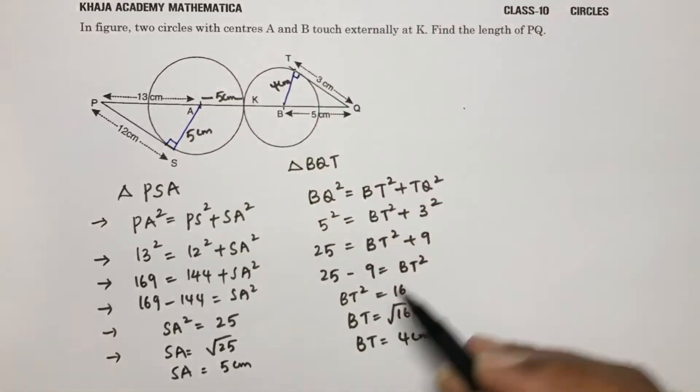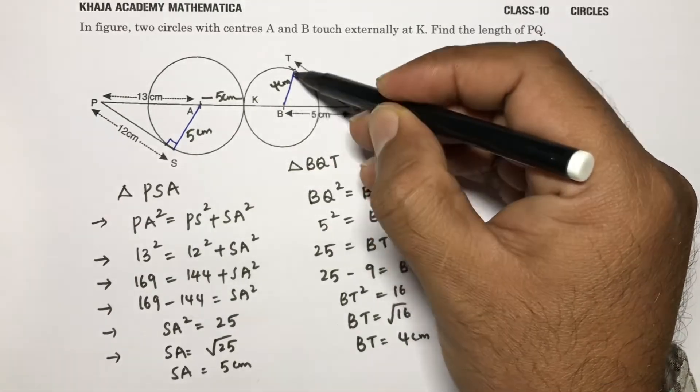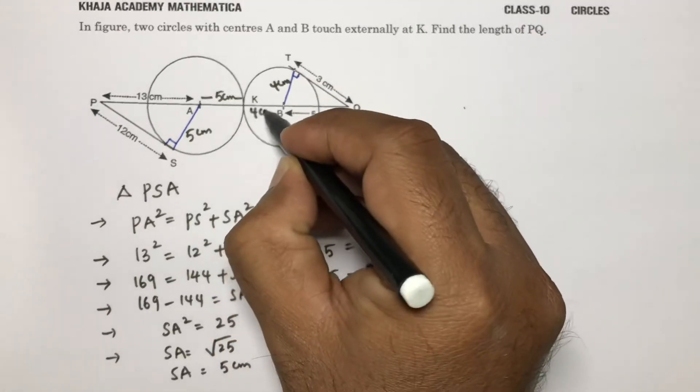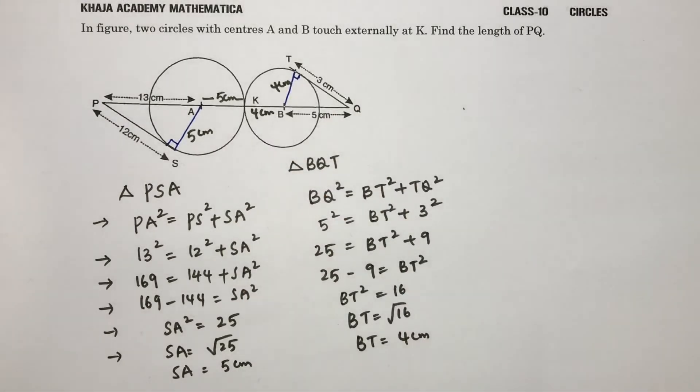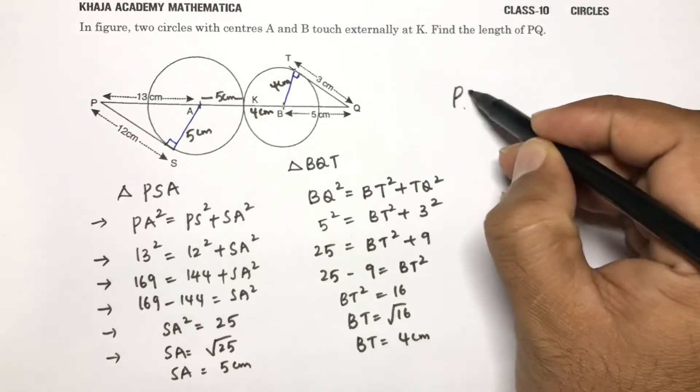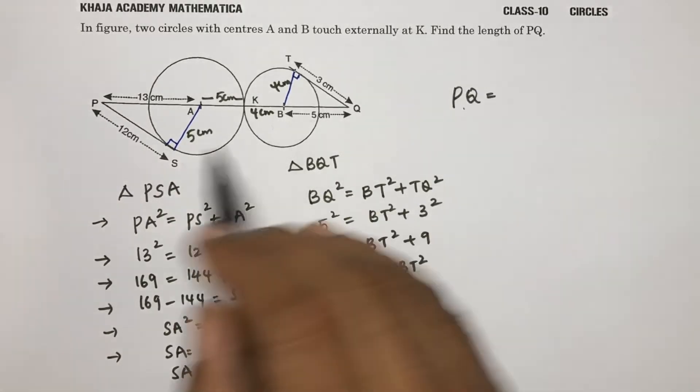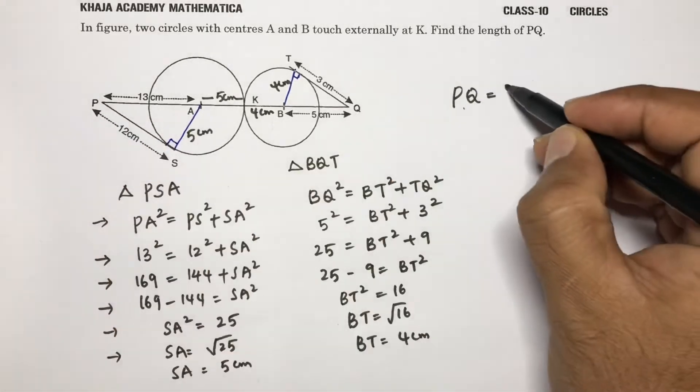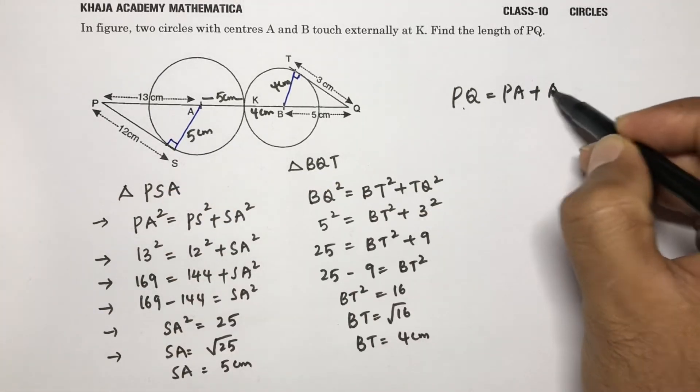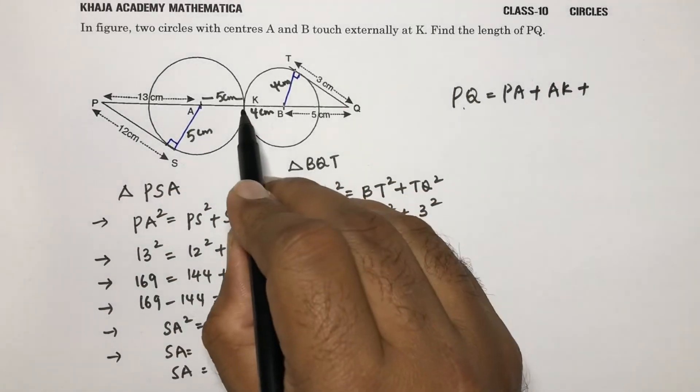So BT is 4 centimeters. If BT is 4, which is the radius of this circle, KB also will be 4 centimeters. Now we need to find PQ. PQ is nothing but PA plus AK plus KB.